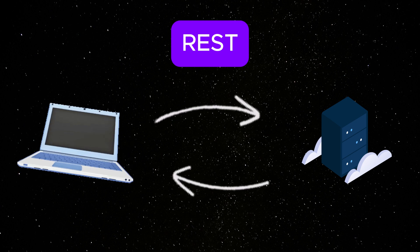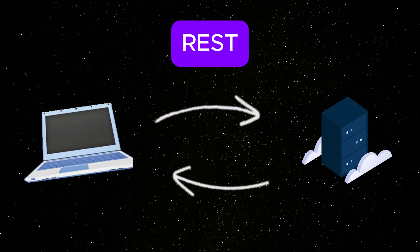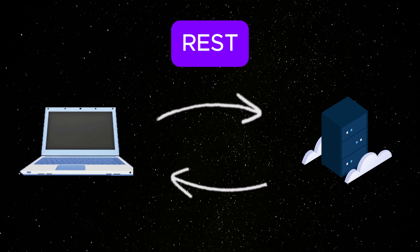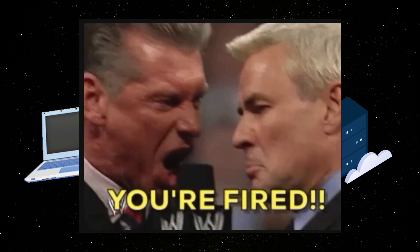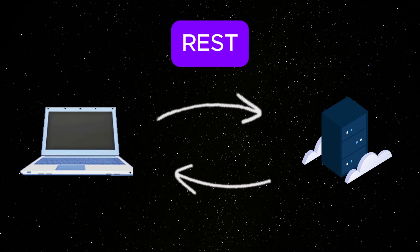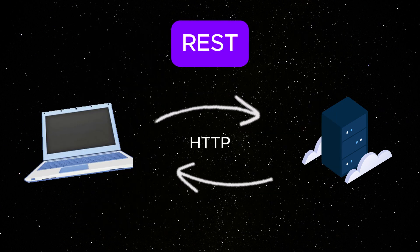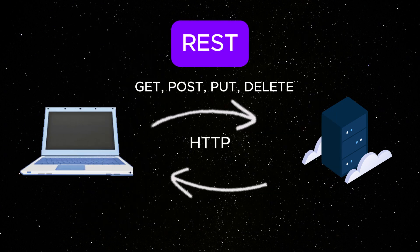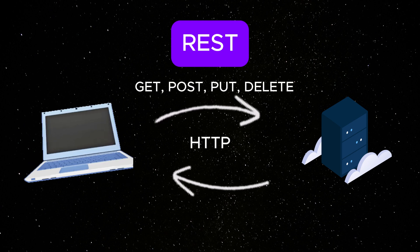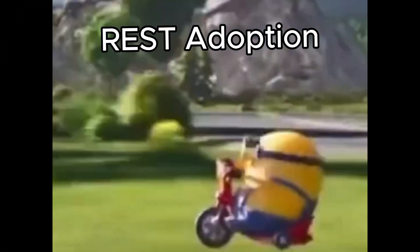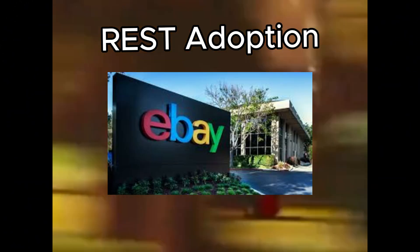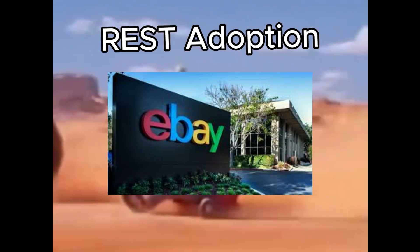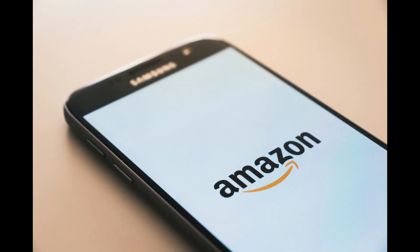REST has rules, but they're more like suggestions. So instead of saying work from office or you're fired, REST is more like: hey, use standard HTTP methods — GET, POST, PUT, DELETE — and just focus on what you're working with. And then bam, REST APIs took off. eBay was the first to jump ship, and then Amazon and all the other big players followed. REST became the cool kid on the block.